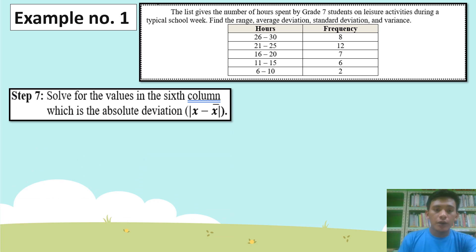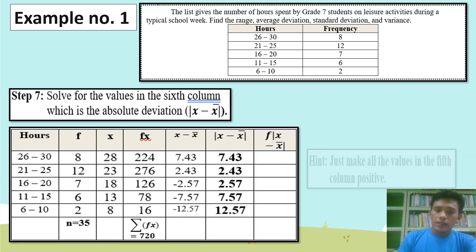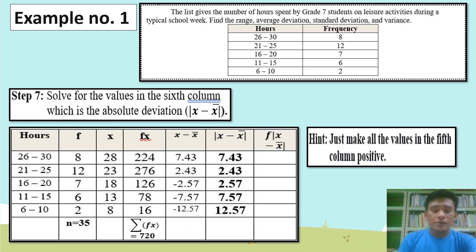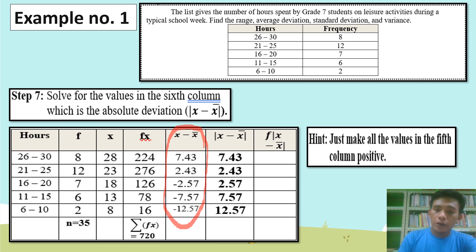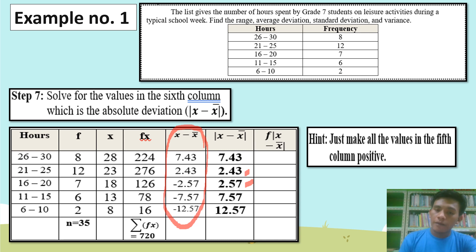Step 7: Solve for the values in the sixth column, which is the absolute deviation of X minus the mean. Hint: just make all the values in the fifth column positive. So positive 7.43, positive 2.43, positive 2.57, positive 7.57, positive 12.57.